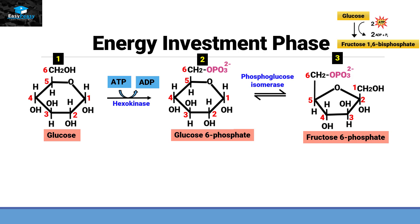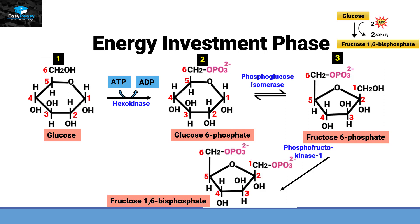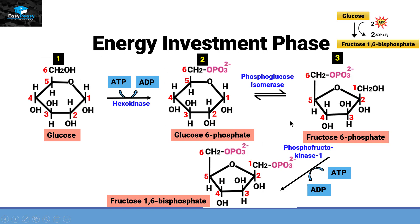Step 3: fructose 6-phosphate, with the help of phosphofructokinase 1, converts into fructose 1,6-bisphosphate. Again, we have a kinase enzyme, so it shifts a phosphate group from ATP (converting it into ADP) to carbon number 1 of fructose 6-phosphate. This completes the energy investment phase, in which two ATP molecules are consumed in steps 1 and 3.